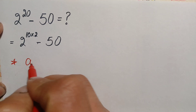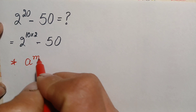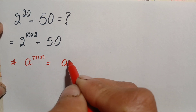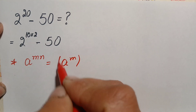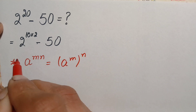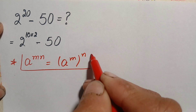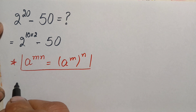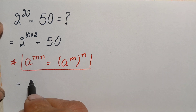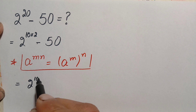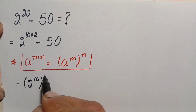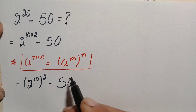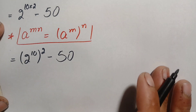Here we will use the exponential identity: a raised to power m times n, which can also be written as a raised to power m, all raised to power n. Using this identity, the expression becomes 2 raised to power 10, all raised to power 2, minus 50.